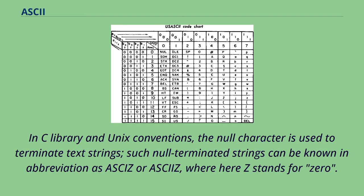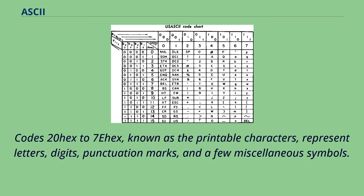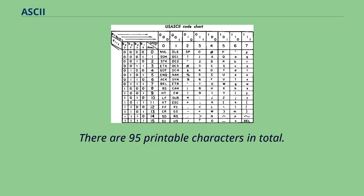In C-library and Unix conventions, the null character is used to terminate text strings; such null-terminated strings can be known in abbreviation as ASCIZ, where Z stands for zero. Other representations might be used by specialist equipment, for example ISO 2047 graphics or hexadecimal numbers. Codes 20 hex to 7E hex, known as the printable characters, represent letters, digits, punctuation marks, and a few miscellaneous symbols. There are 95 printable characters in total.